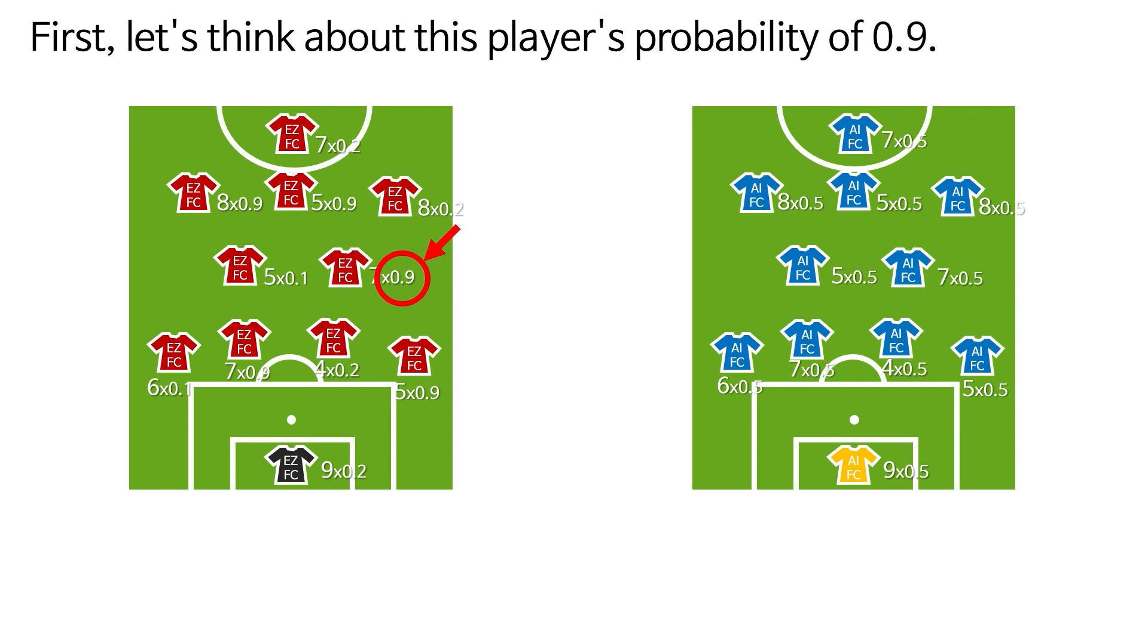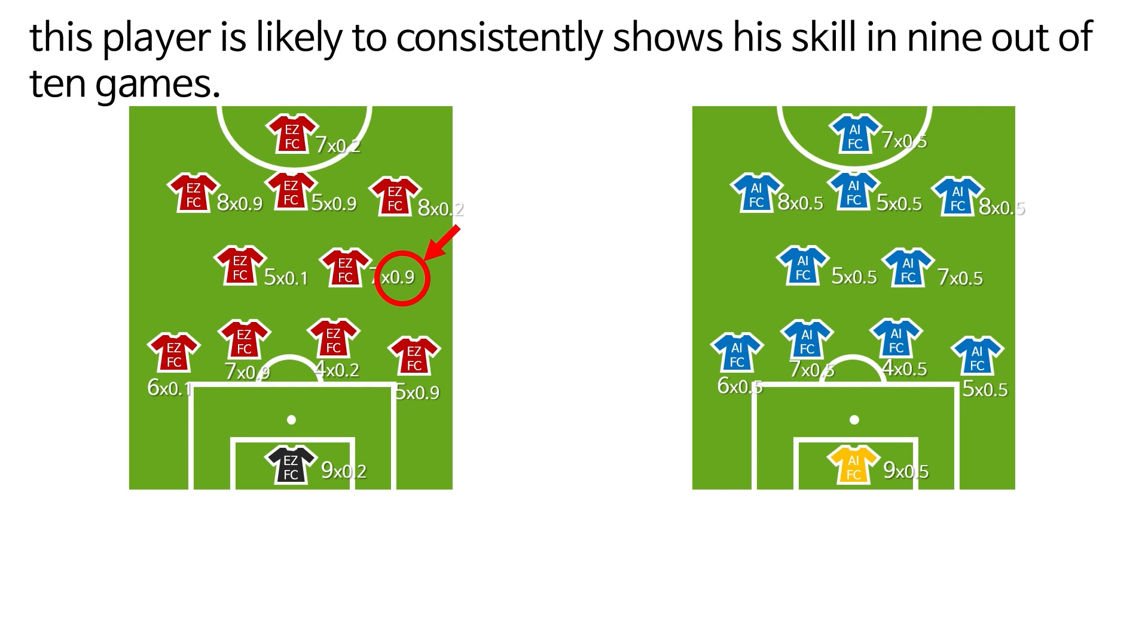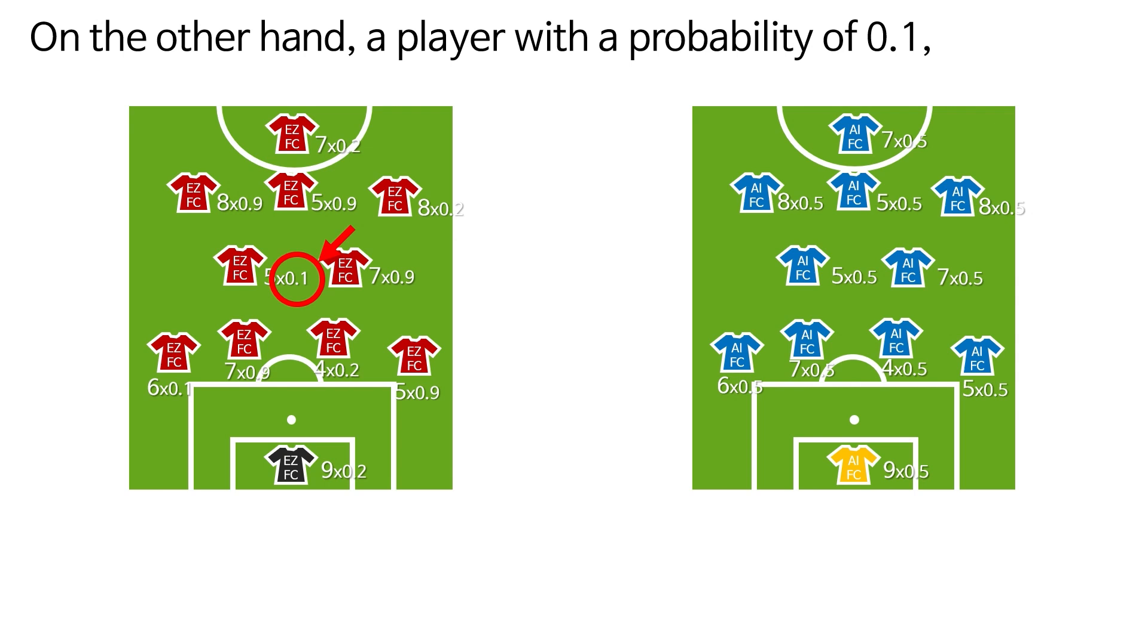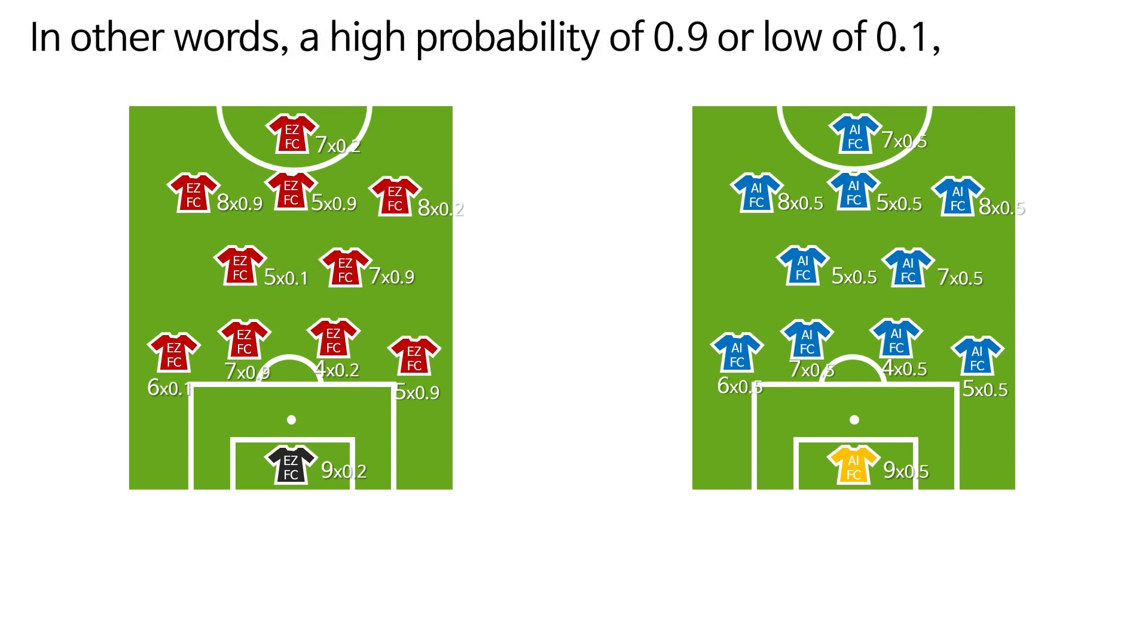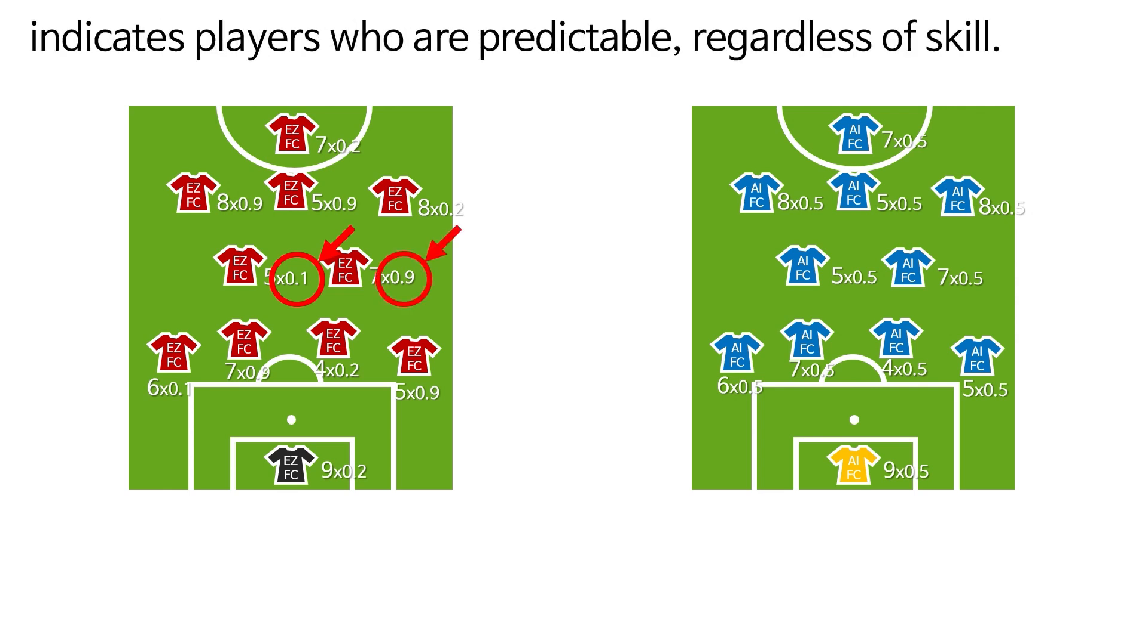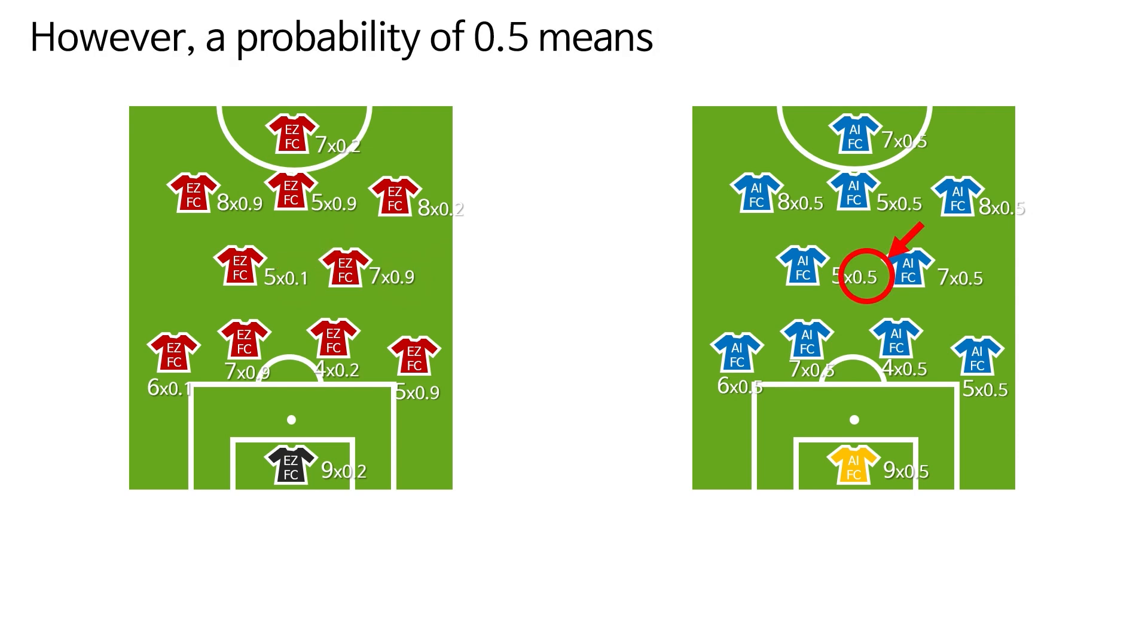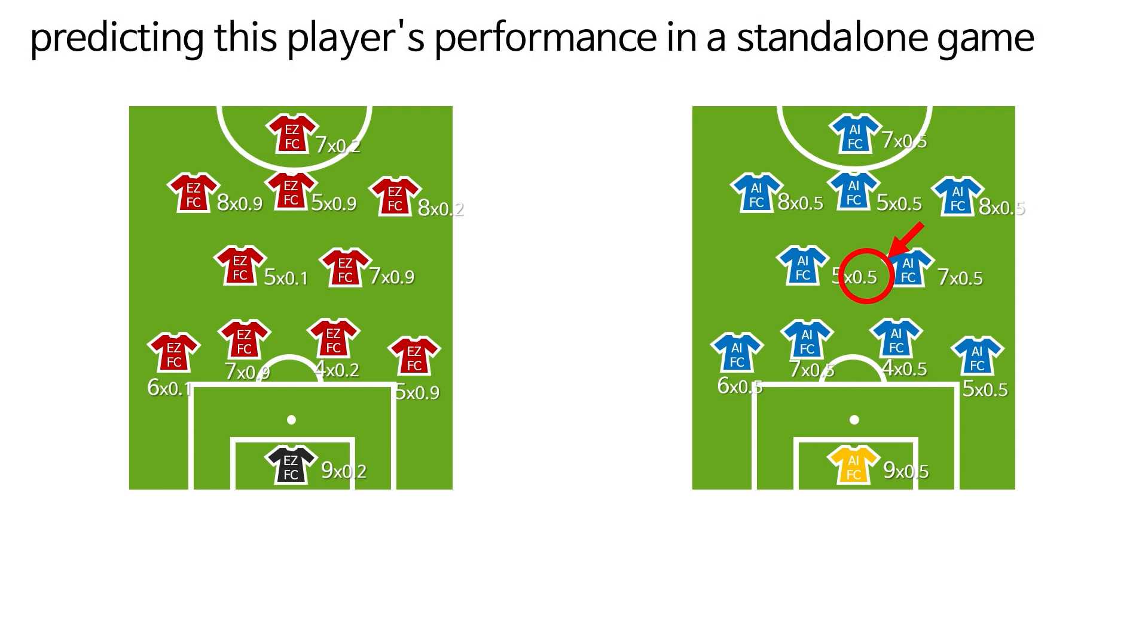First, let's think about this player's probability of 0.9. A probability of 0.9 means this player is likely to consistently show his skill in 9 out of 10 games. On the other hand, a player with a probability of 0.1 means that 9 out of 10 games, he is consistently underperforming. In other words, a high probability of 0.9 or low of 0.1, consistently performing well or consistently performing poorly, indicates players who are predictable, regardless of skill. However, a probability of 0.5 means it's a 50-50 chance. That means the player might show his skill, or he might not. So this player is quite unpredictable, like flipping a coin with an equal chance of landing heads or tails. Predicting this player's performance in a standalone game would be quite uncertain.